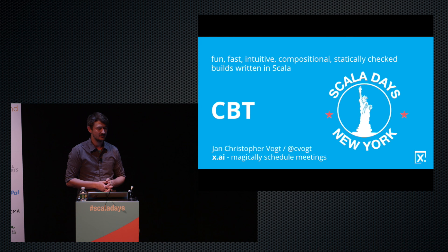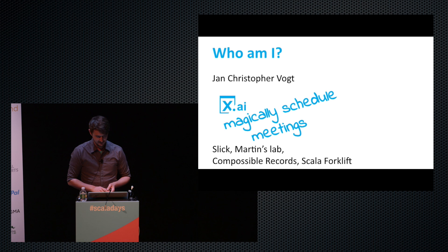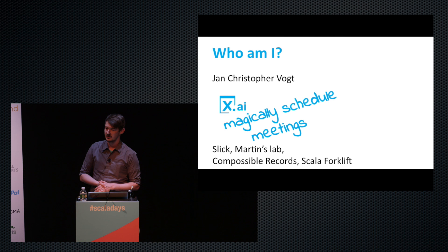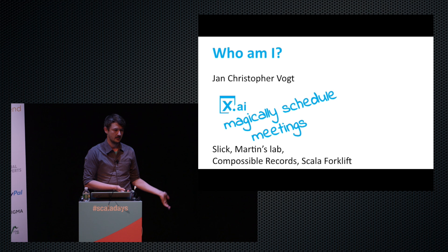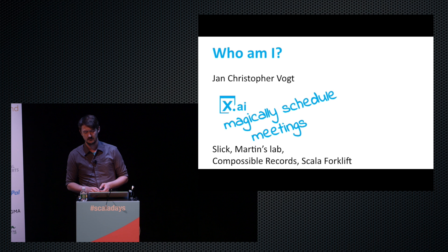Welcome to my talk. I'll tell you a little bit what I did — how I spent my weekends and evenings in the last six months. Quickly about me: I'm Jan-Christopher Vogt. I work at X.AI in New York City, where we magically schedule meetings with artificial intelligence. You may also know me from co-authoring Slick, working in Martin's lab for a few years, doing the Composable Records presentation last year at Scala Days, and being involved in Scala Forklift, the database migration tool for Scala.